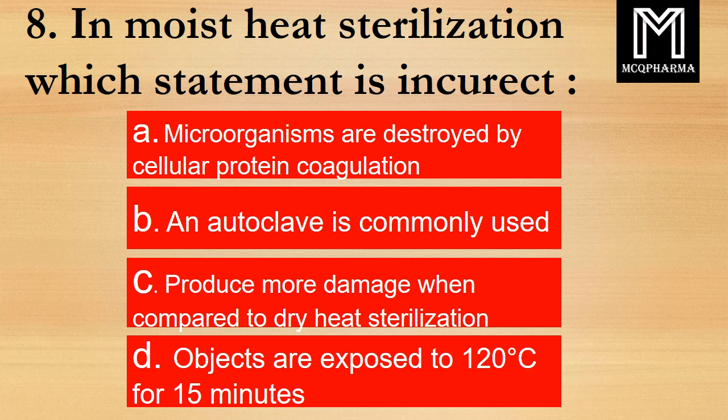Question number 8. In moist heat sterilization, which statement is incorrect? Option A: Microorganisms are destroyed by cellular protein coagulation. B: An autoclave is commonly used. C: Produces more damage when compared to dry heat sterilization. D: Objects are exposed to 120 degree Celsius for 15 minutes. Correct answer: Option C, Produces more damage when compared to dry heat sterilization.